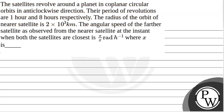Let's read the question. The question says that the satellite revolved around a planet in co-planar circular orbits in anticlockwise direction. Their period of revolutions are 1 hour and 8 hours respectively. The radius of the orbit of the nearer satellite is 2 into 10 to the power 3 km. The angular speed of the farther satellite as observed from the nearer satellite at the instant when both satellites are closest is pi by x radian per hour, where x is to be found.